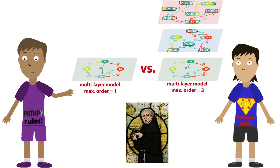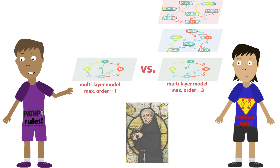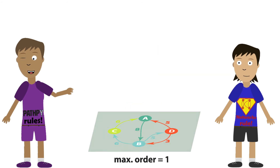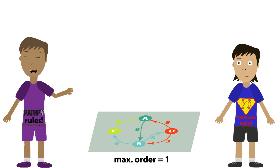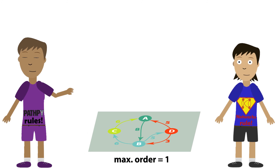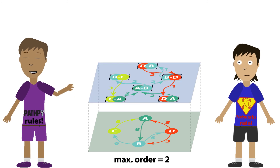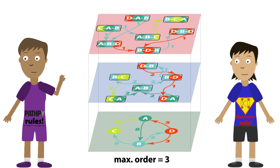This helps us to decide how many layers of higher-order graphical models we need to explain our data. If a first-order model is enough, then network analysis is justified. The need for higher-order model layers signifies temporal correlations that question standard network analysis.